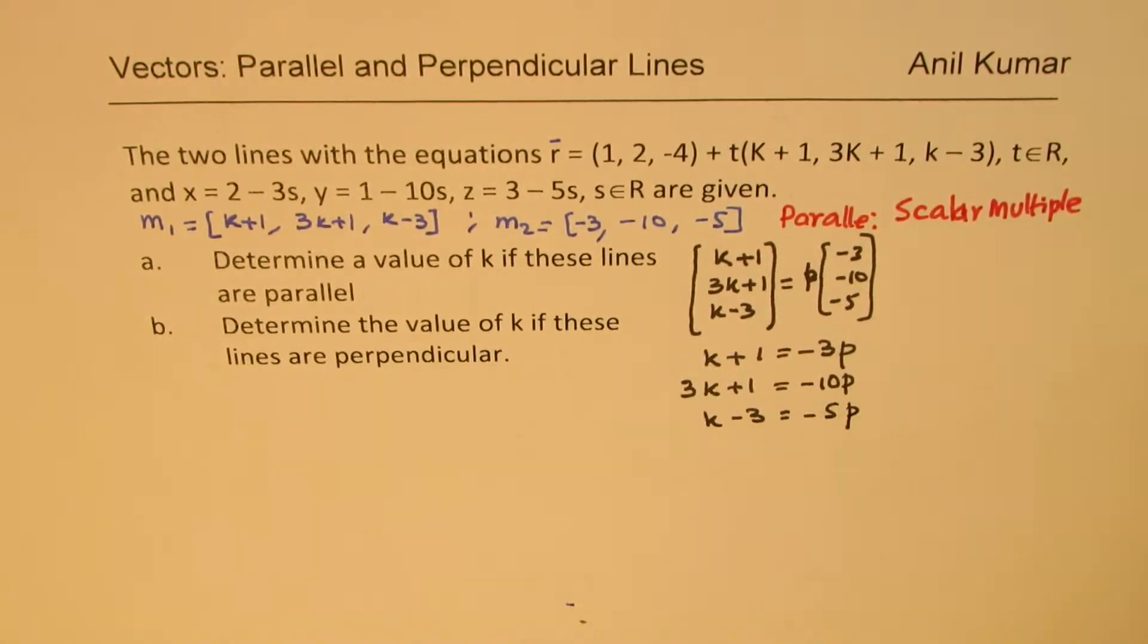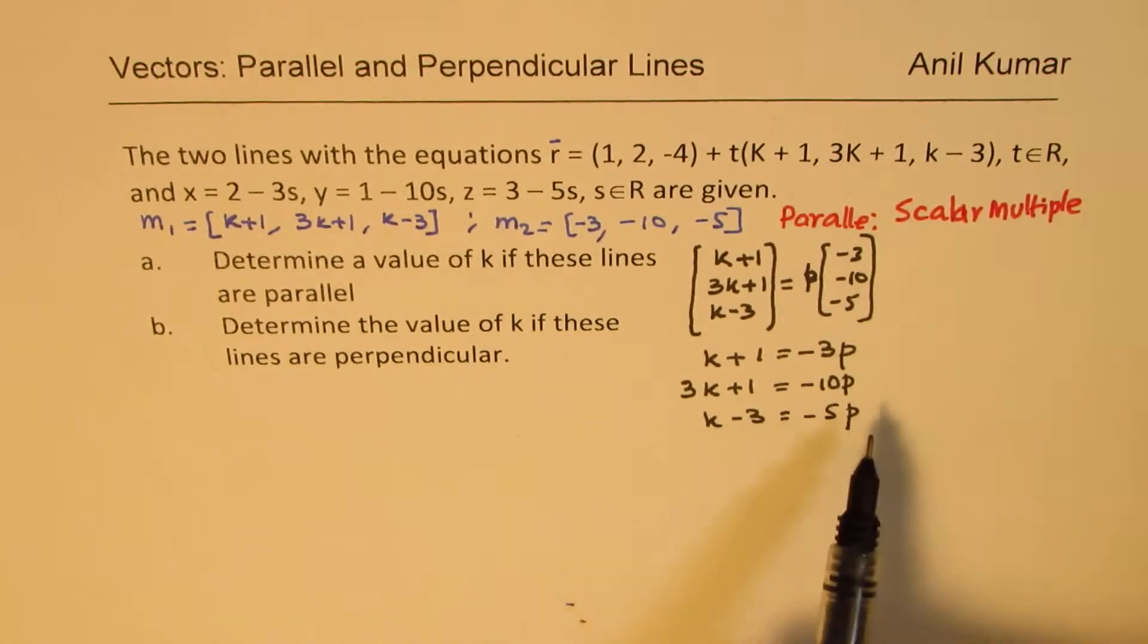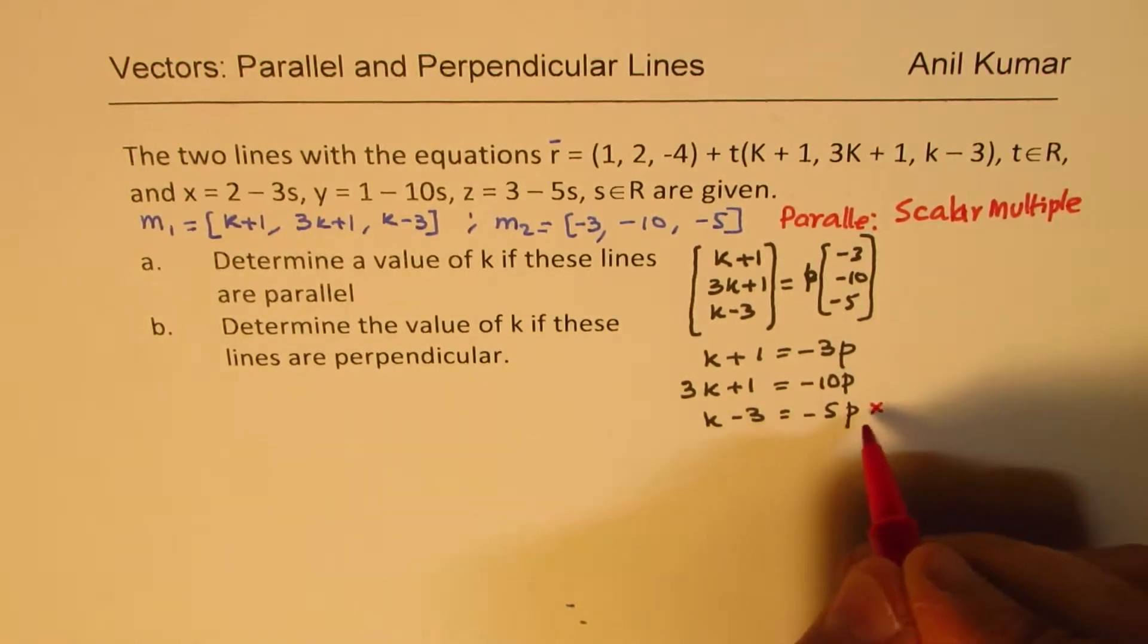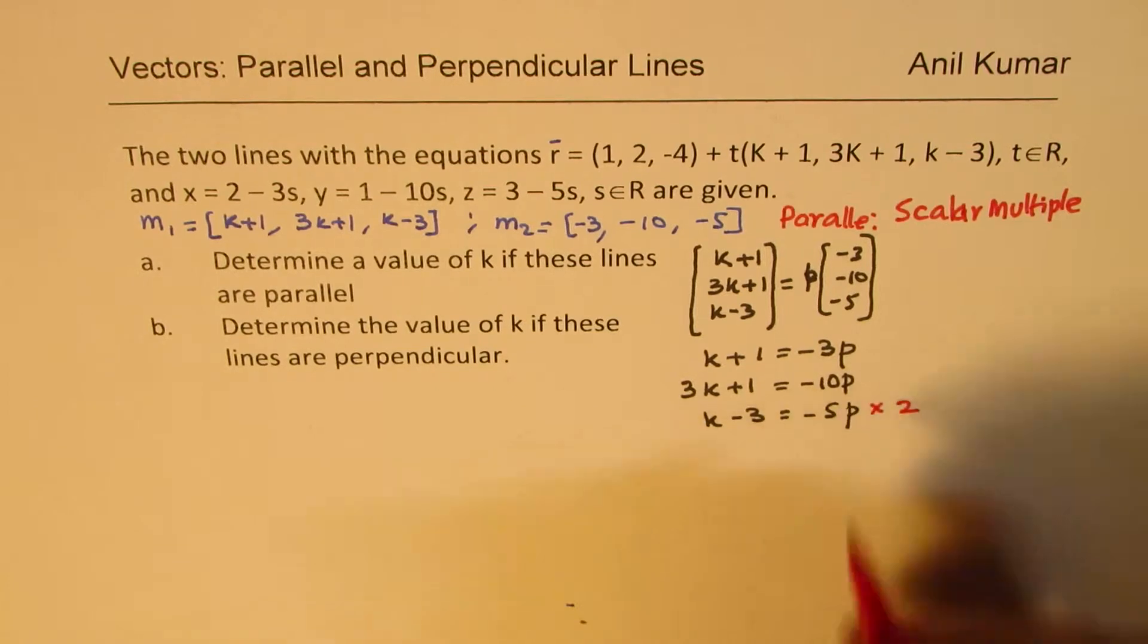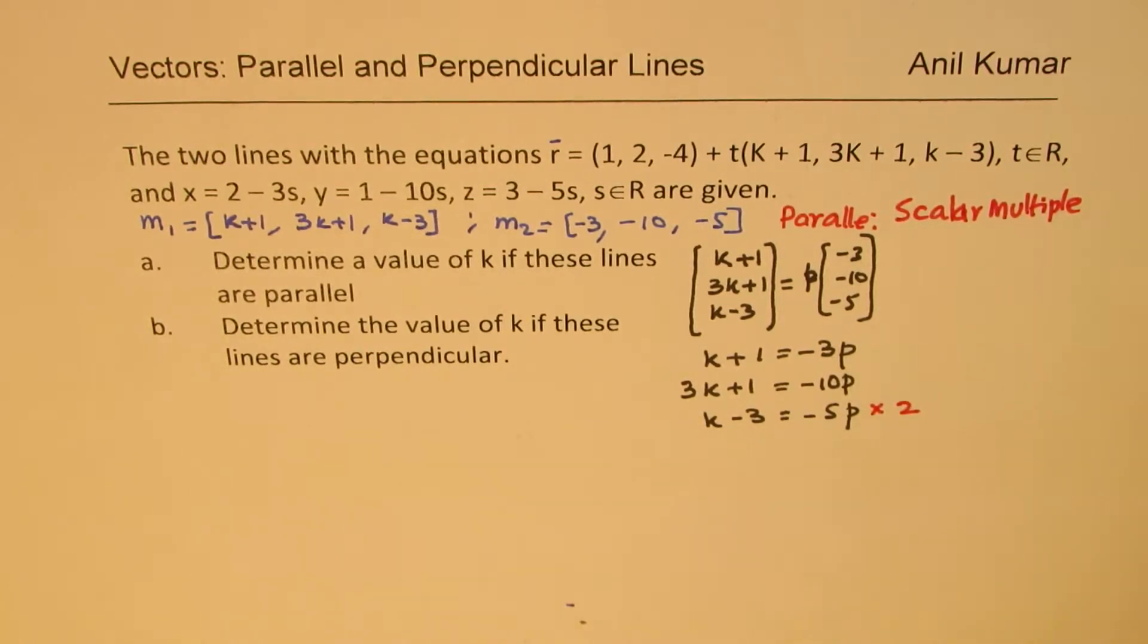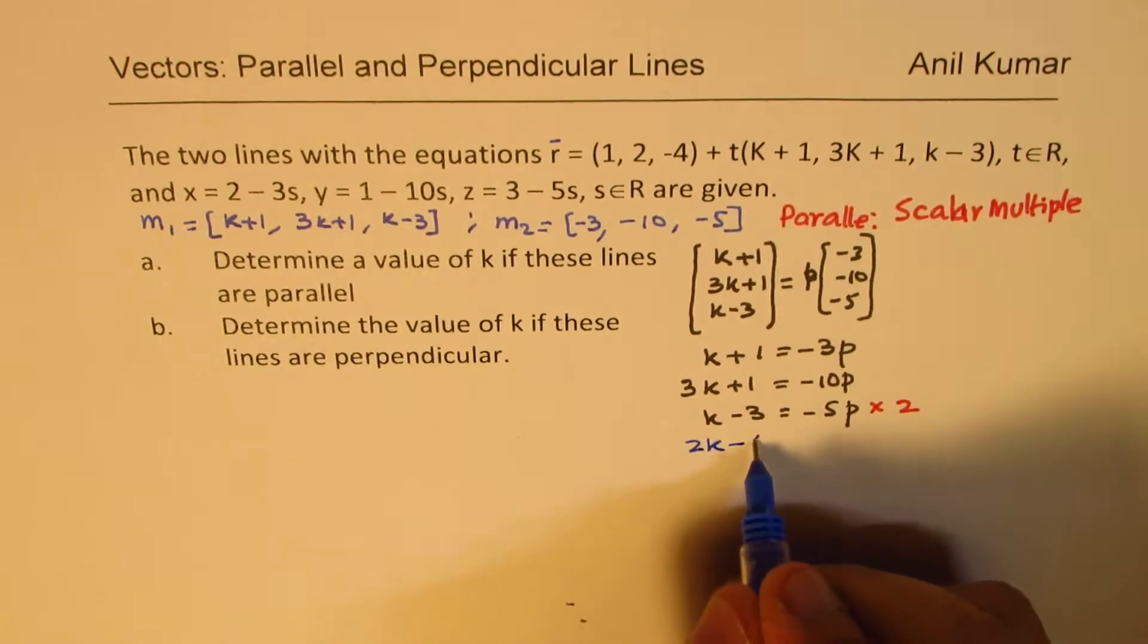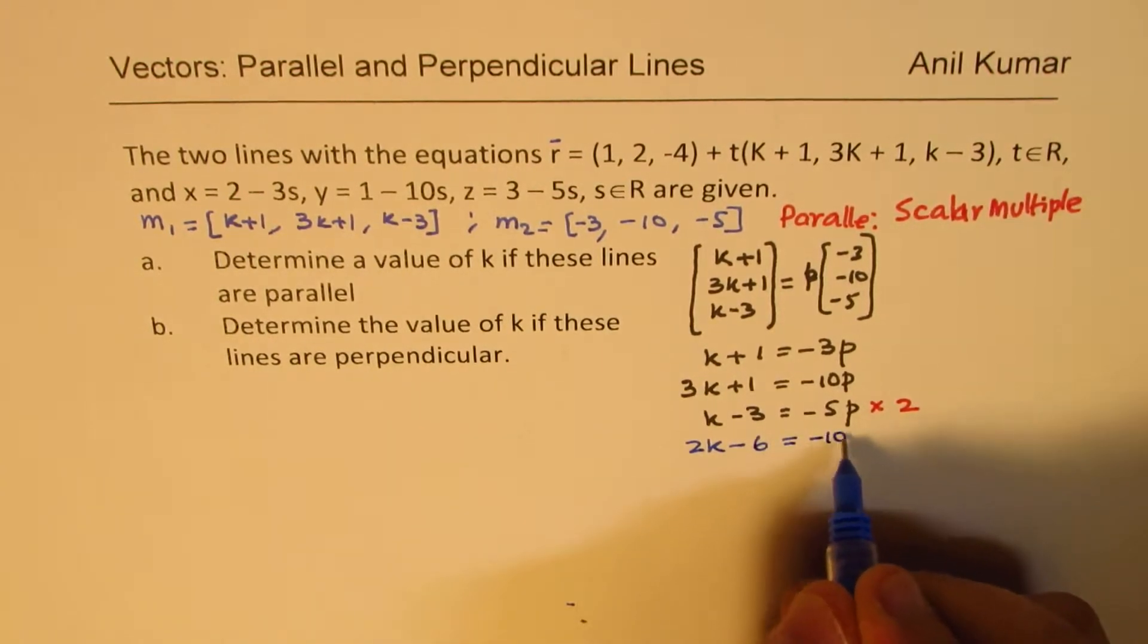So these are your equations. Since we need to find the value of k, we can eliminate p using the second and the third equation. Let's multiply this by 2, so we get 10p here. So if I multiply by 2, I get 2k-6 = -10p.